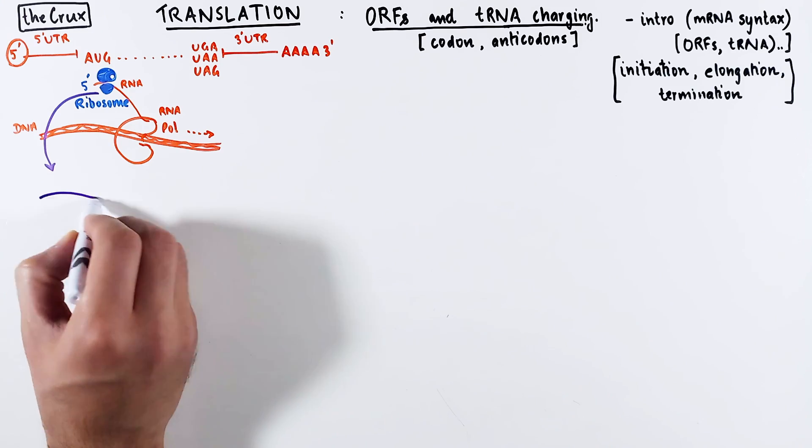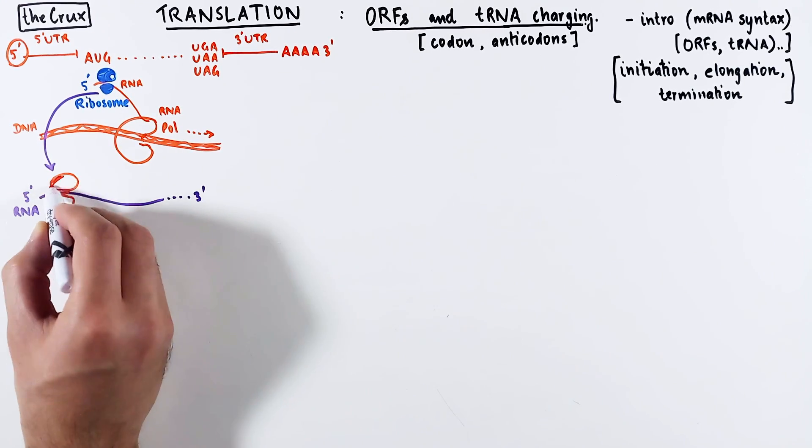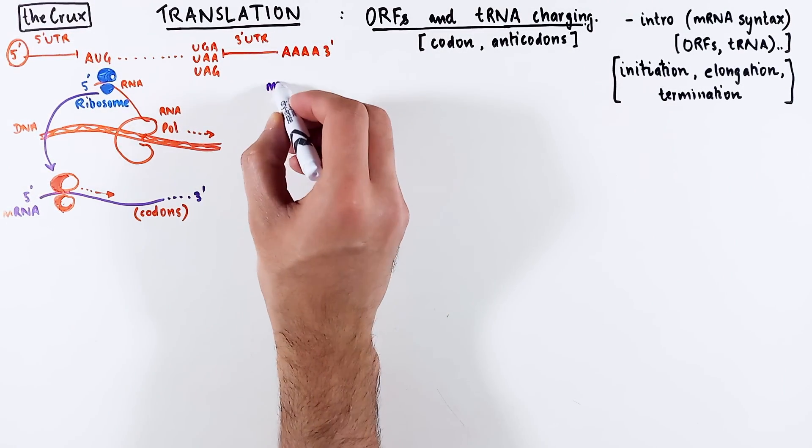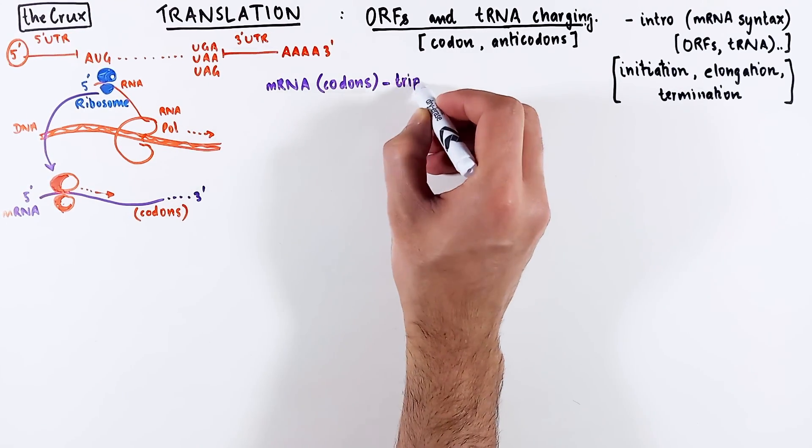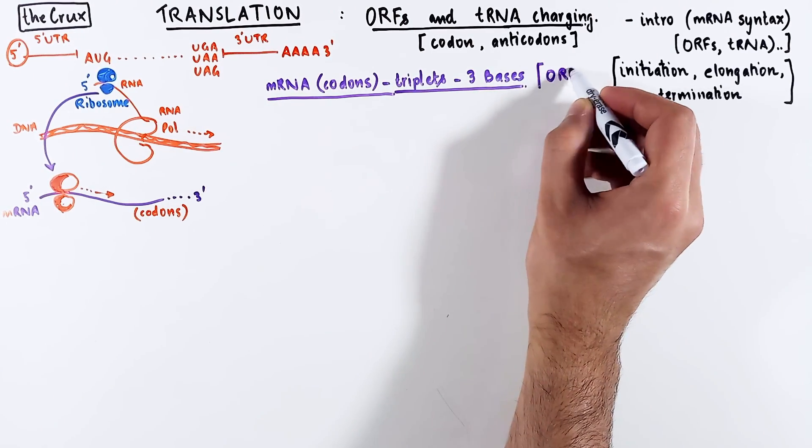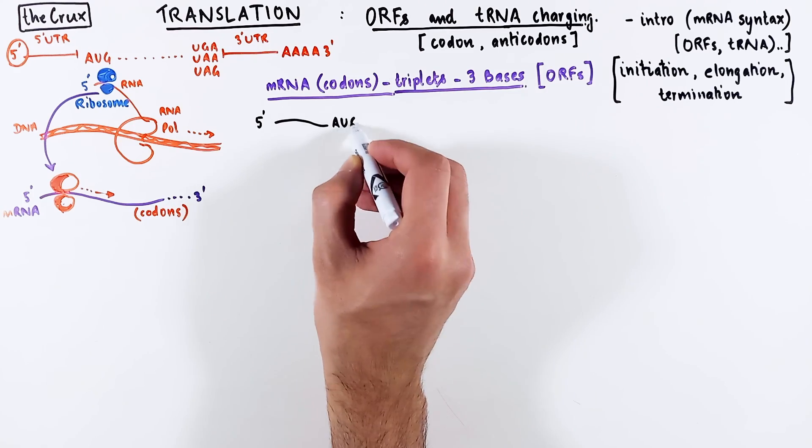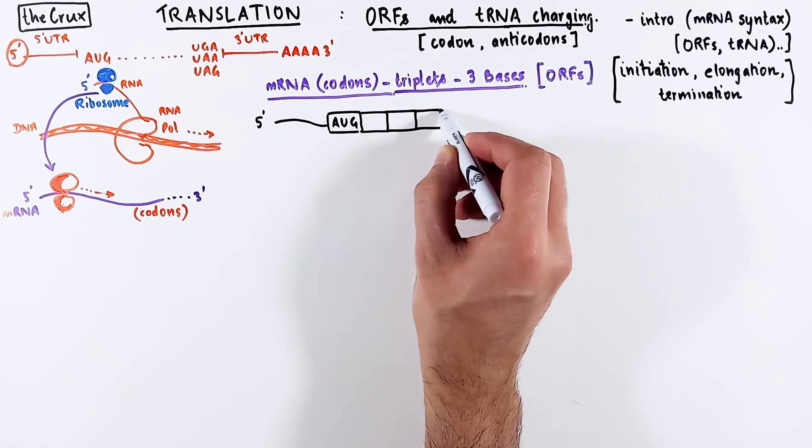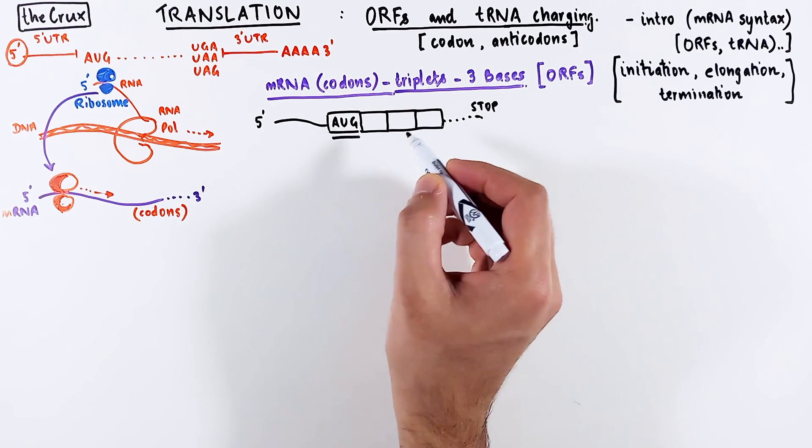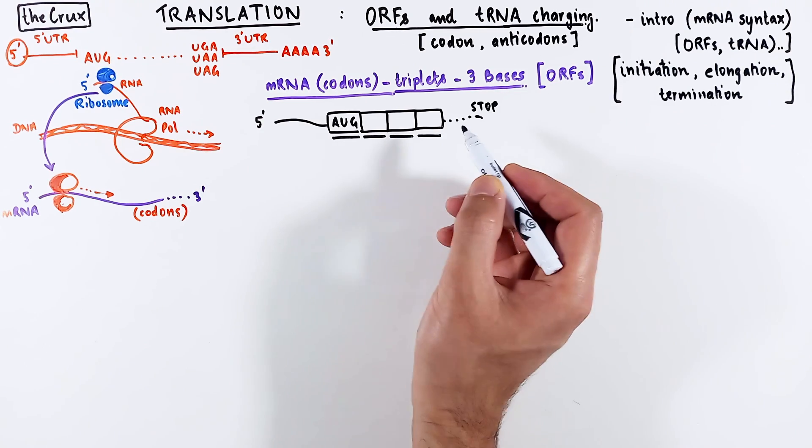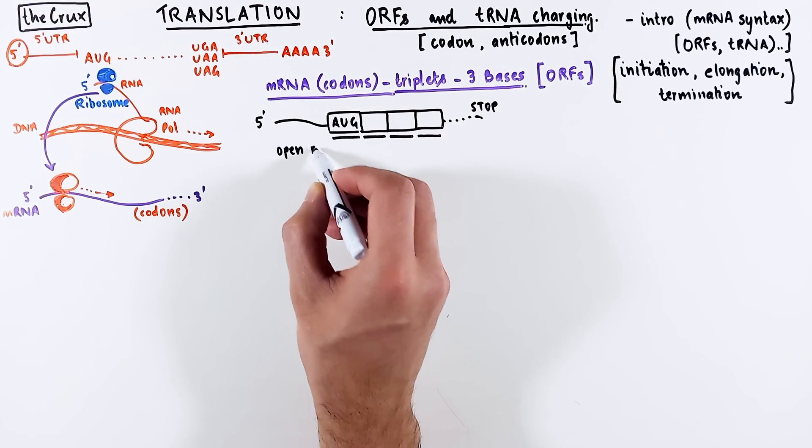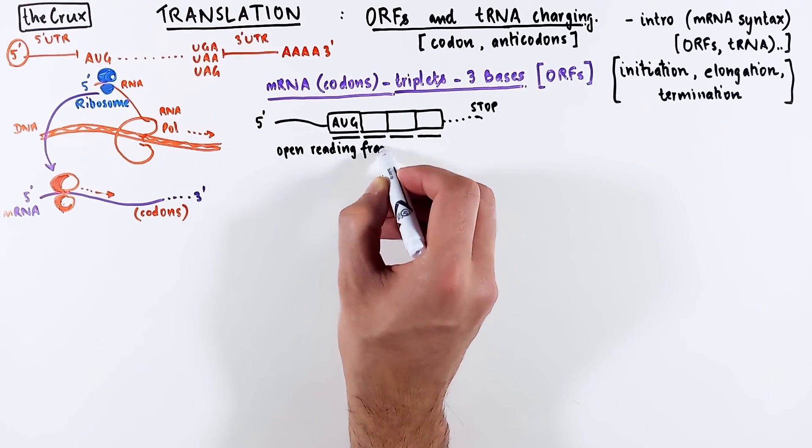Now let's zoom into this part of the RNA where ribosome is bound. The ribosome reads the mRNA three bases at a time. So this codon in the mRNA is a triplet, which is three bases at a time. And this specific sequence of triplets starting at a given point that is read by the ribosome until the stop codon defines the reading frame.